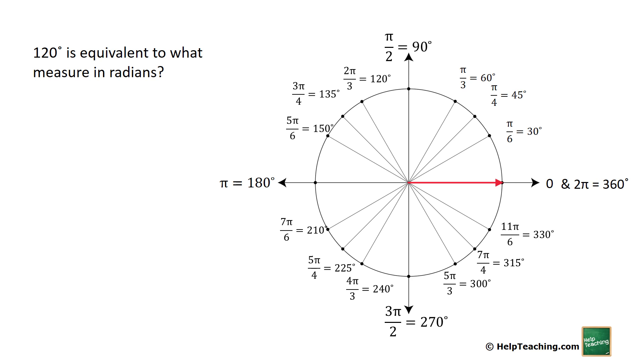120 degrees is equivalent to what measure in radians? So all we do is come over here to 120 degrees and the answer is two pi over three radians.